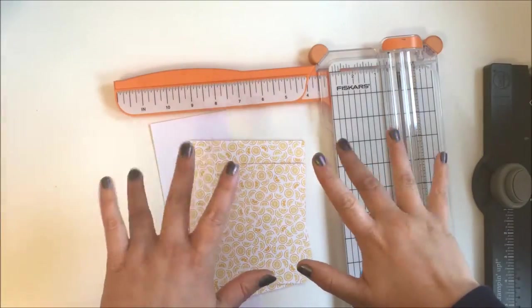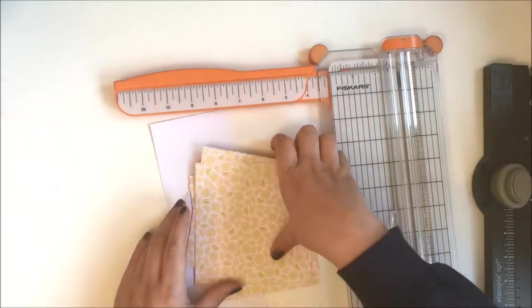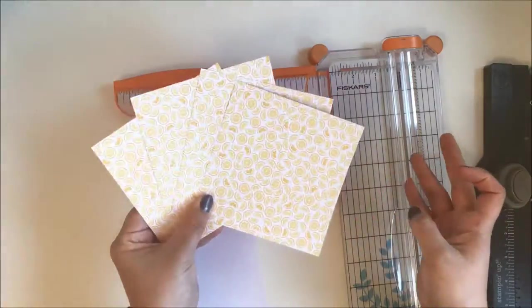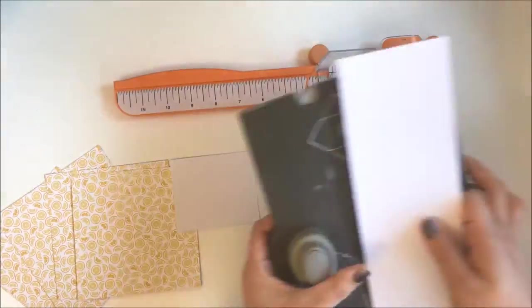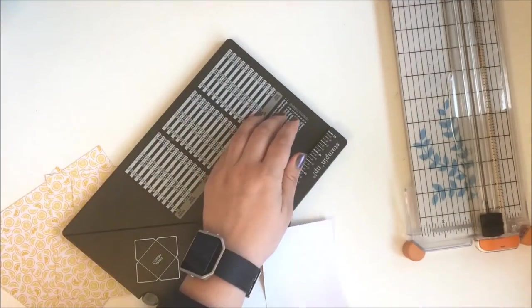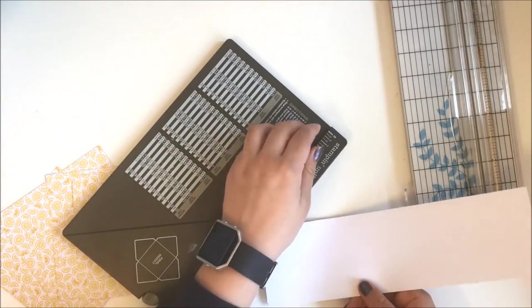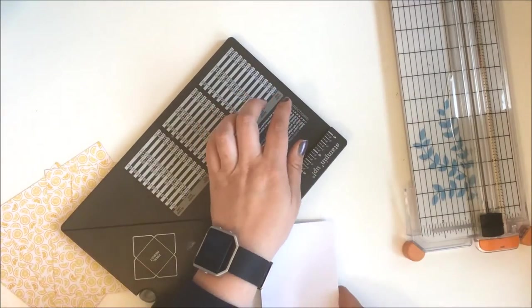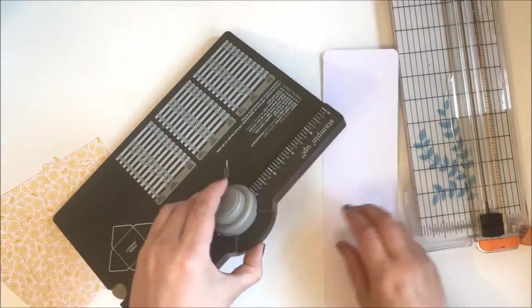As per usual, I will leave all the instructions in the description bar below. The first piece that we're working on is this long piece which is 11 inches by 3.25 inches. I personally am rounding the corners, but this is totally optional.